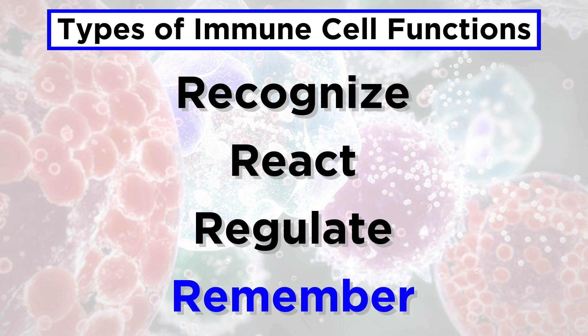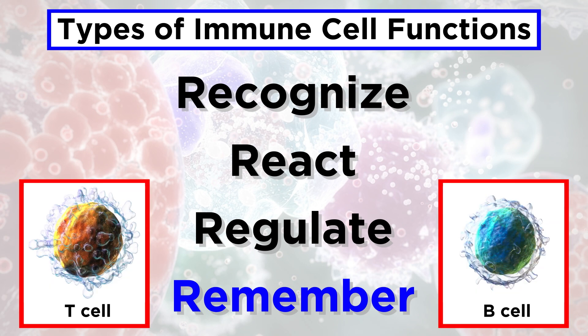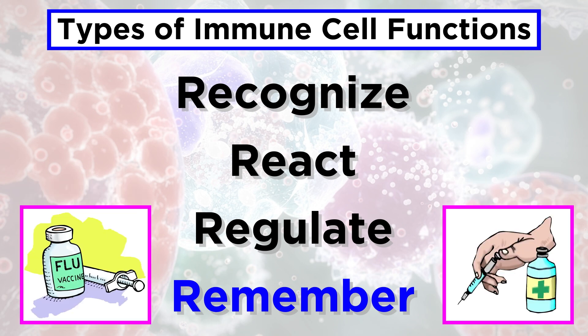And finally, function four: remember. Immune cells called T and B lymphocytes have the ability to remember specific threats. Emerging research suggests that other immune cells may also be able to remember previous infections. This concept of immune memory is the basis behind vaccinations, and it will be discussed extensively later in the series.